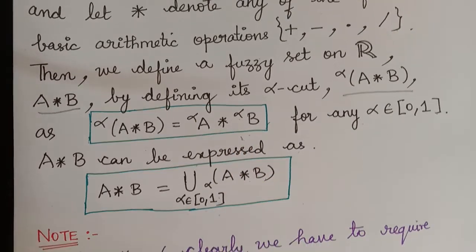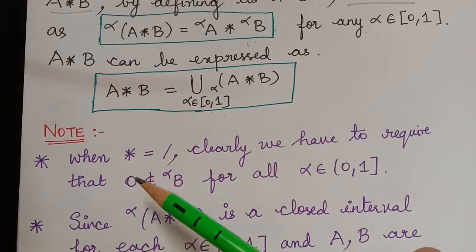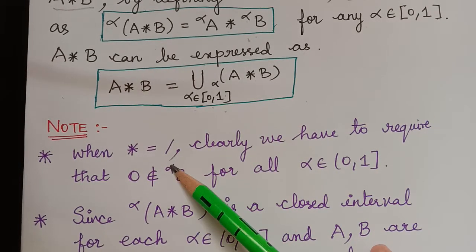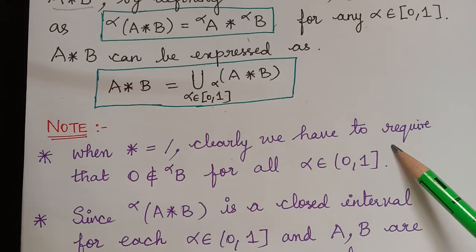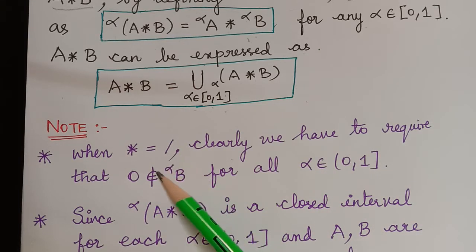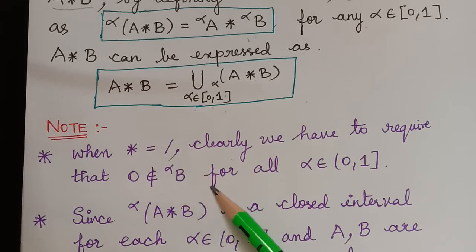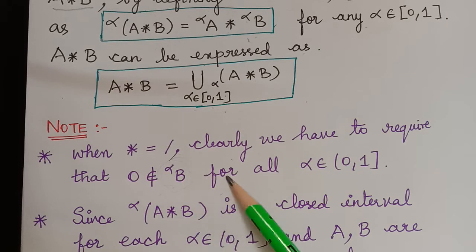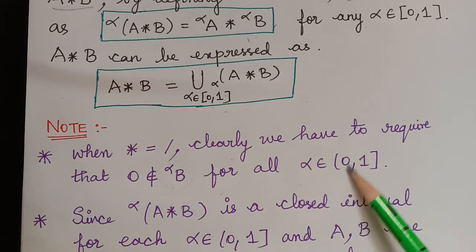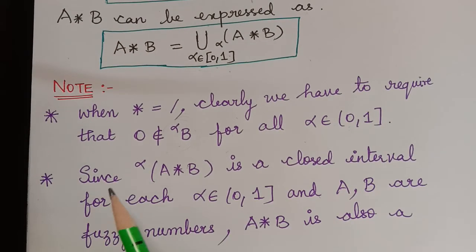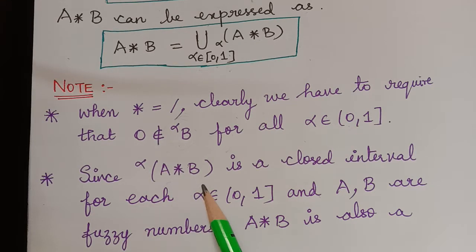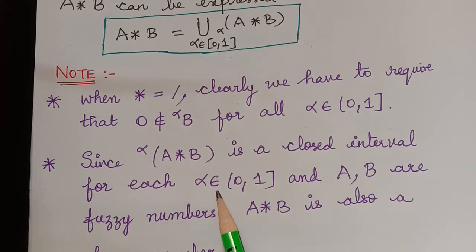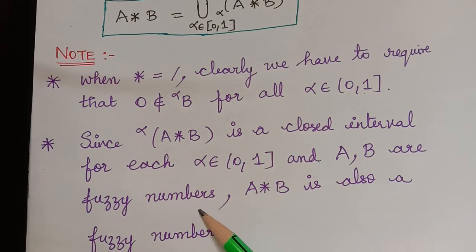Here we have two notes. The first note says that if the star operation is division, then we require that 0 is not an element of the alpha cut of B, because we have A divided by B, so 0 should not be an element of the alpha cut of B, for all alpha element of the interval (0,1]. The second note says that since the alpha cut of A star B is a closed interval for each alpha, and A and B are fuzzy numbers, A star B is also a fuzzy number.